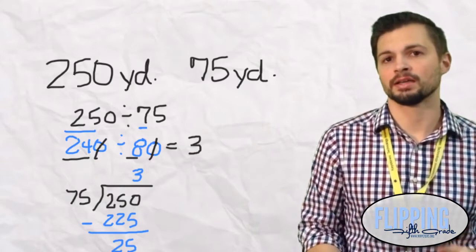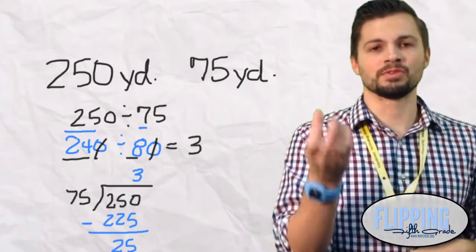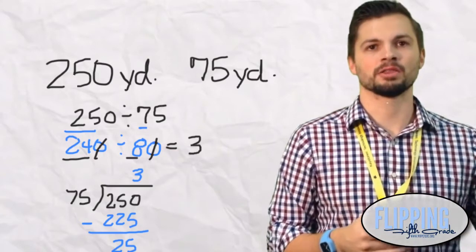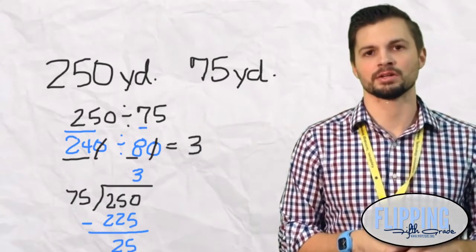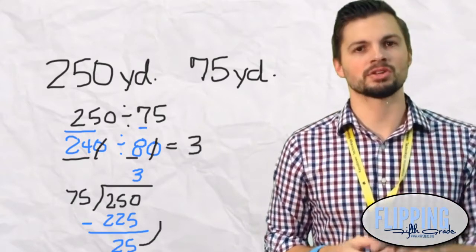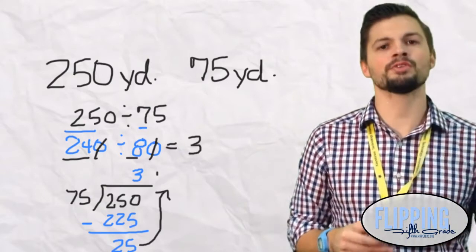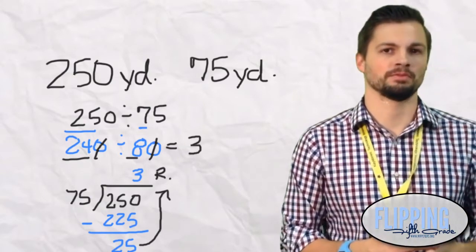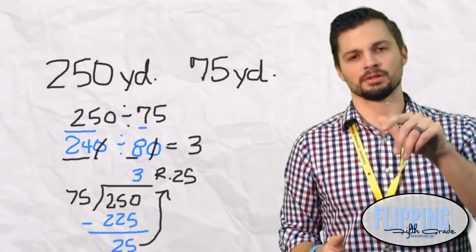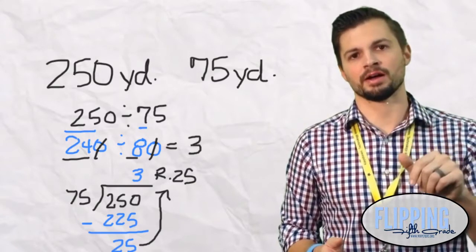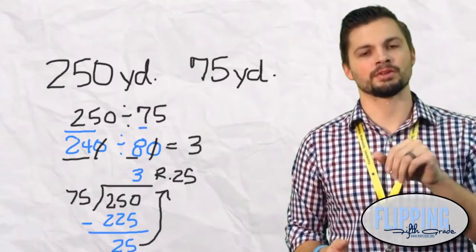And we check, is our number down there, our difference down there of 25 less than 75, the divisor? The answer is yes. So that is our remainder. So if we go back to the original problem, we are now going to say 250 divided by 75 is 3 remainder 25.